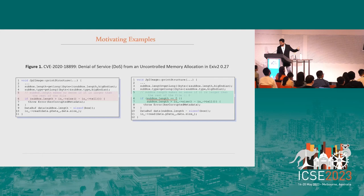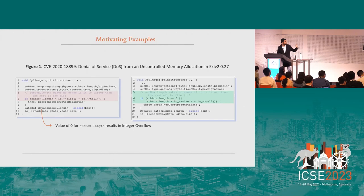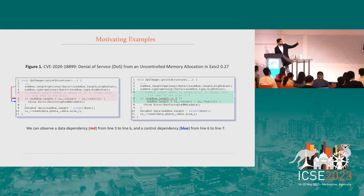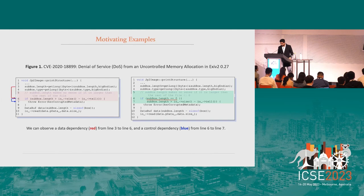While the first three issues can be resolved by tweaking the training process and model design, we specifically focus on the issue of learning irrelevant features. For this purpose, we introduce what we call class separation features. As an example, consider this code change that resolves a denial of service bug from uncontrolled memory allocation in the Exiv2 project. The fix involved adding an underlying condition to check for subbox.length being zero, which was causing integer overflow and an incorrectly constructed execution flow to the exception point on line seven.